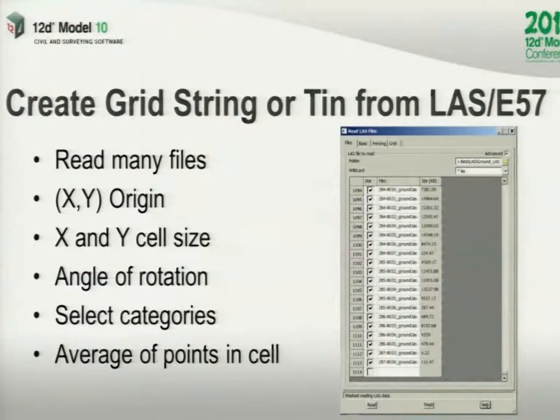The other sorts of things we use these for are bringing in LAS data, or in the future E57 data. A LAS file — that's a laser file — it might be airborne or point cloud type data. Now, the problem with point cloud data is you get millions and millions of points, and most of them are pretty useless. What do you do with 10 billion points? So what happens here is when we read in that data, we basically can set a grid cell size, orientation, and as the data comes in, we can average the points in that cell and just end up with one value.